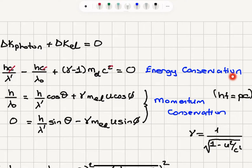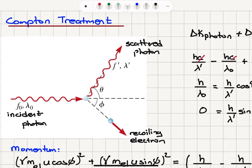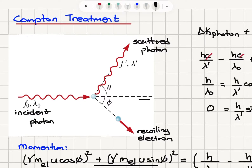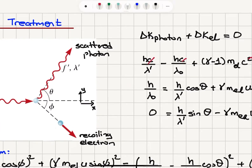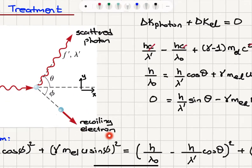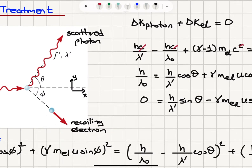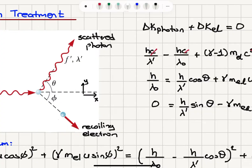Now we look at the incoming photon momentum. Let's call this the x-axis and this the y-axis. If we write momentum conservation on the x-axis, the incoming photon has momentum h over lambda zero. The scattered photon will have an x-component of its momentum h over lambda prime times cosine theta, and the recoiling electron, using the relativistic formula where mu is replaced by gamma mu, will have x-component gamma mu cosine phi.